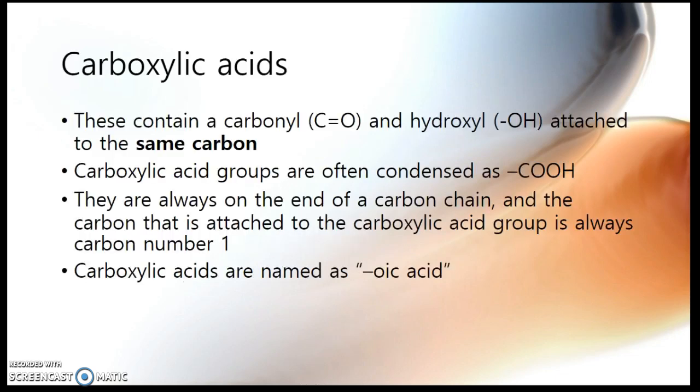Okay, so first off, carboxylic acids contain two functional groups on the same carbon, or two things. So there is a double bond O and an OH connected to the same carbon. Now because these bonds take up three out of the four of those bonds from carbon, it must be on the end of a carbon chain. And the carboxylic acid group is always numbered as carbon 1. To name them, we call them something or rather oic acid. And we can shorten it, if we're using a condensed structural formula, as COOH.